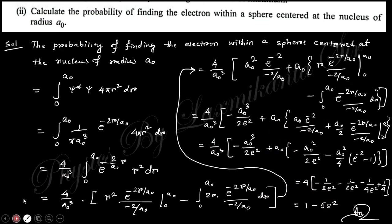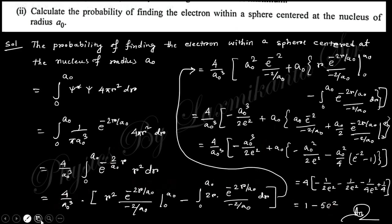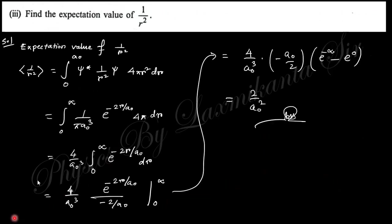Calculate the probability of finding the electron within a sphere of given radius centered at the nucleus. The total probability is obtained by integrating the radial probability function, and the expectation value ⟨1/r²⟩ = 2/(na₀)² for the hydrogen atom.